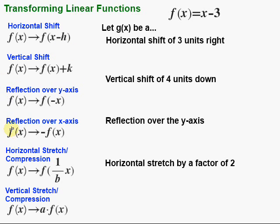Then we have reflections over the x-axis and y-axis. Notice the difference: for the y-axis reflection, we're going to put in a negative x for x in our function, and for the x-axis reflection, we're basically going to distribute a negative through the function. Then we have stretches and compressions, horizontal and vertical. For a horizontal compression, we have this factor b that we put in. And then a vertical stretch or compression, we just multiply on the outside, distributing that factor through the function.